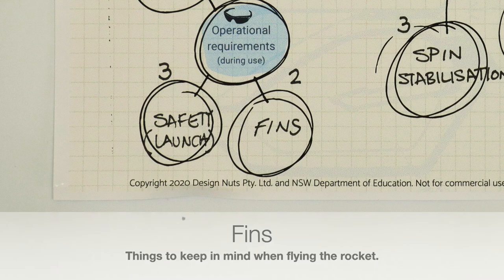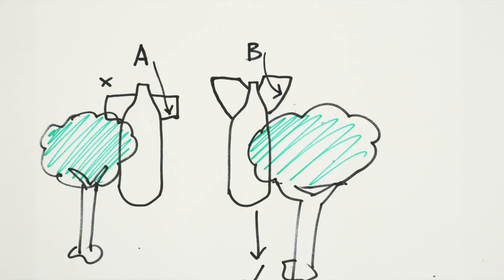The second bubble is fins. Flying near trees can be tricky. The leading edge of fin A is way more likely to get caught up in the tree. Fin B is a swept back design, and it's much more likely to fall or slip through the tree.